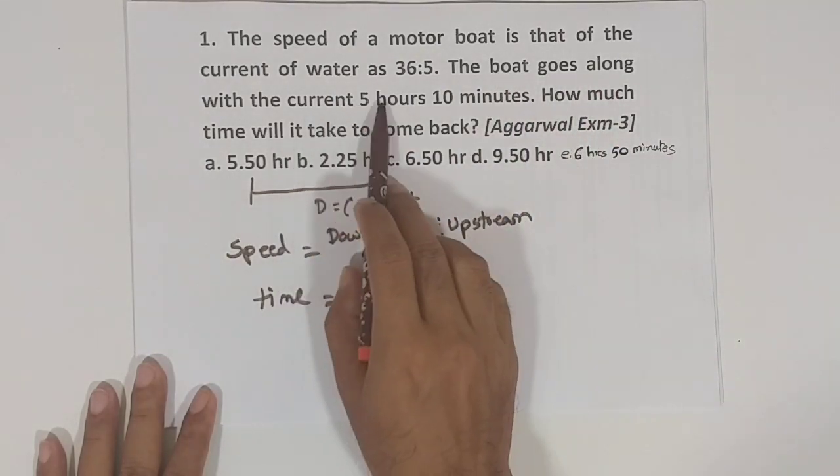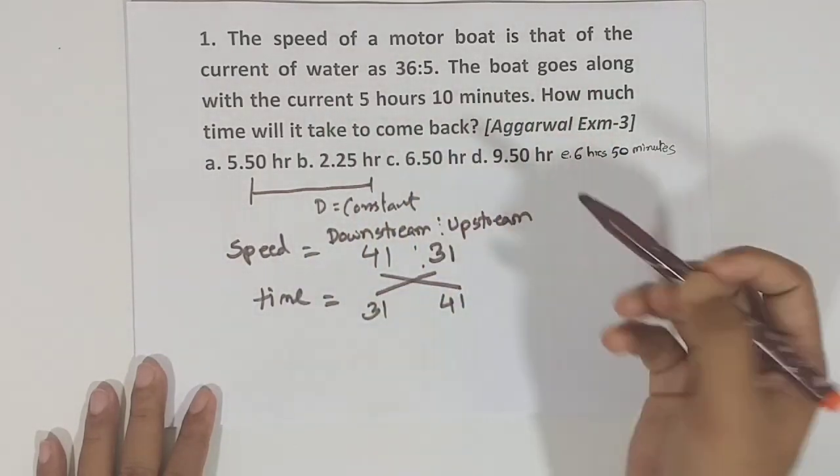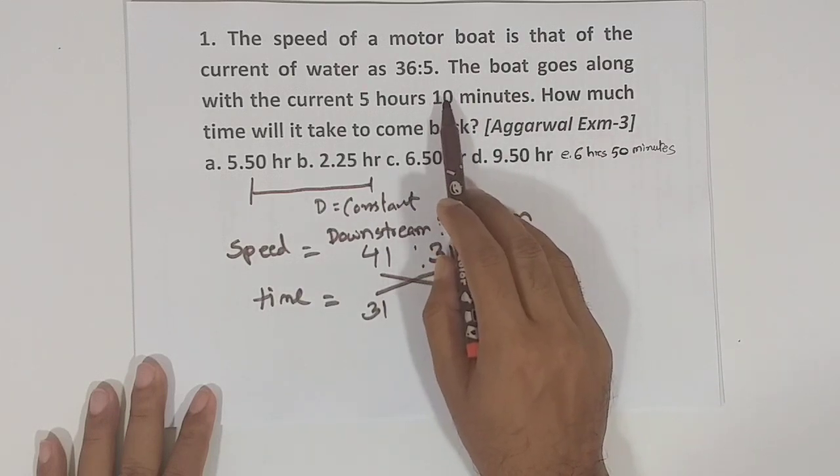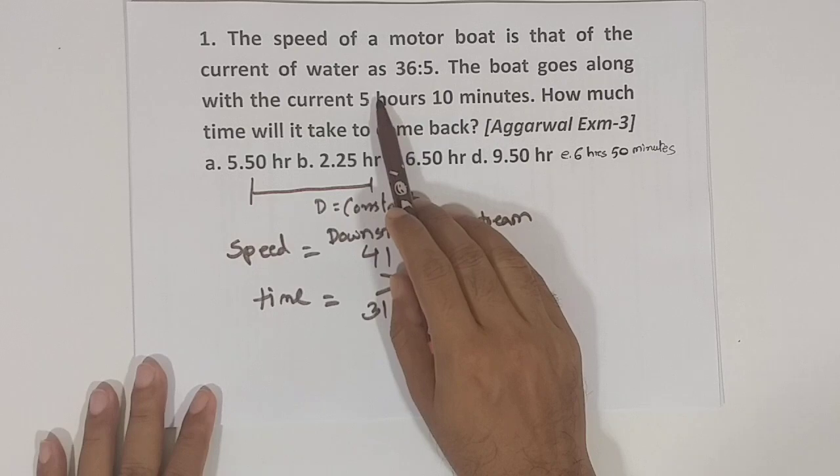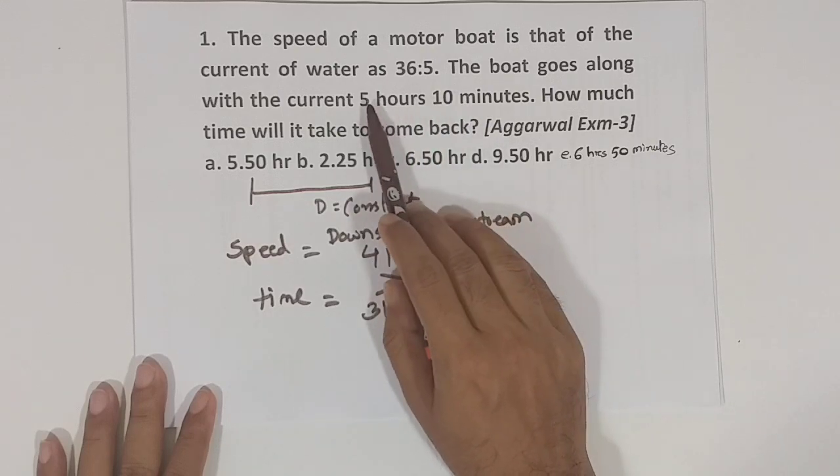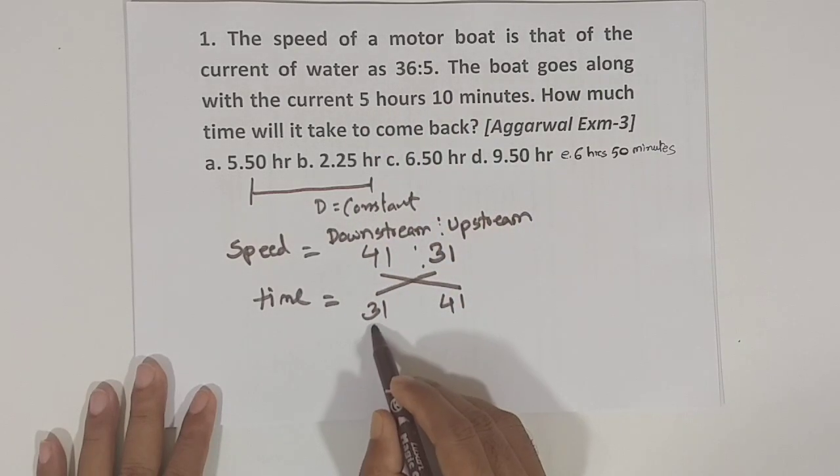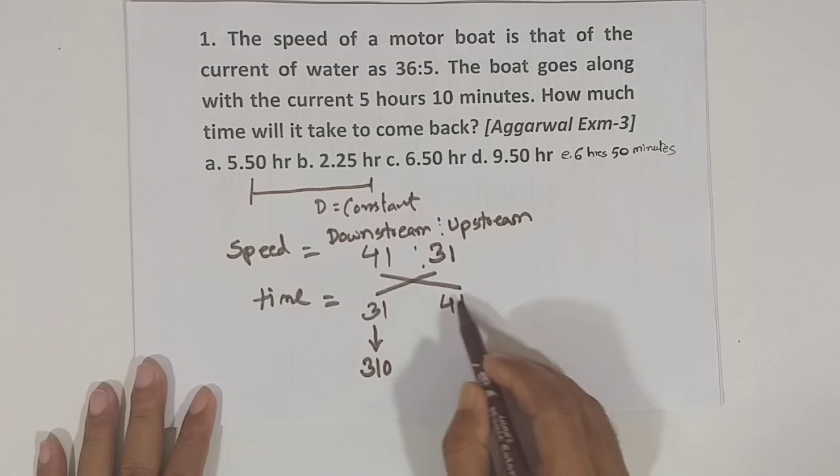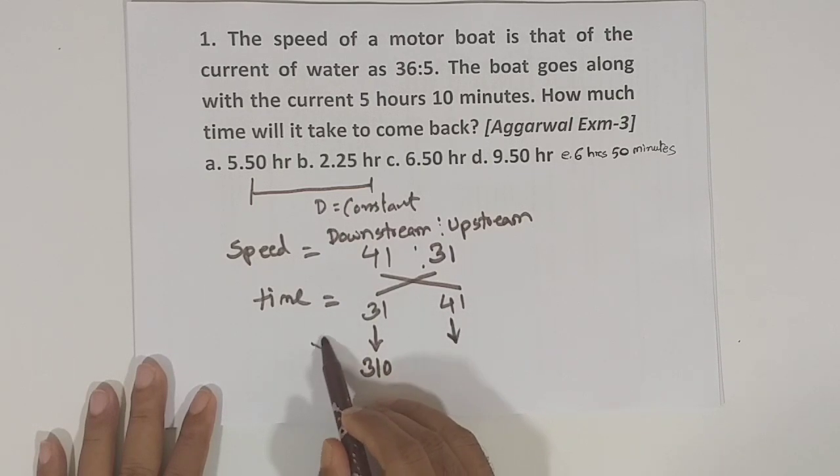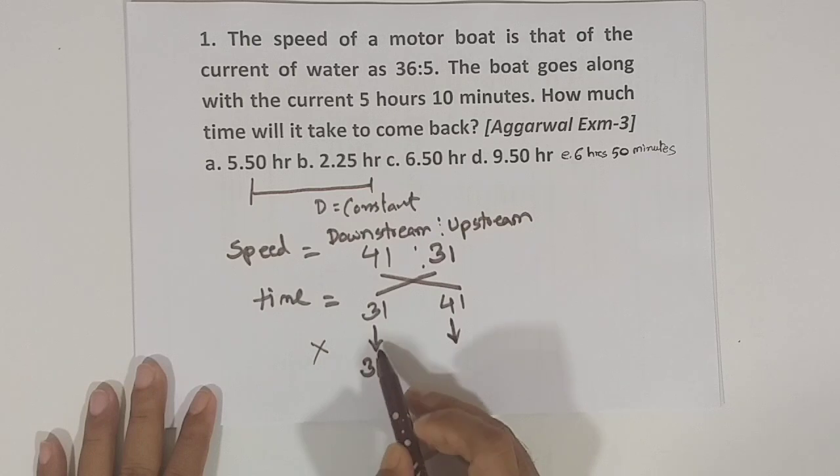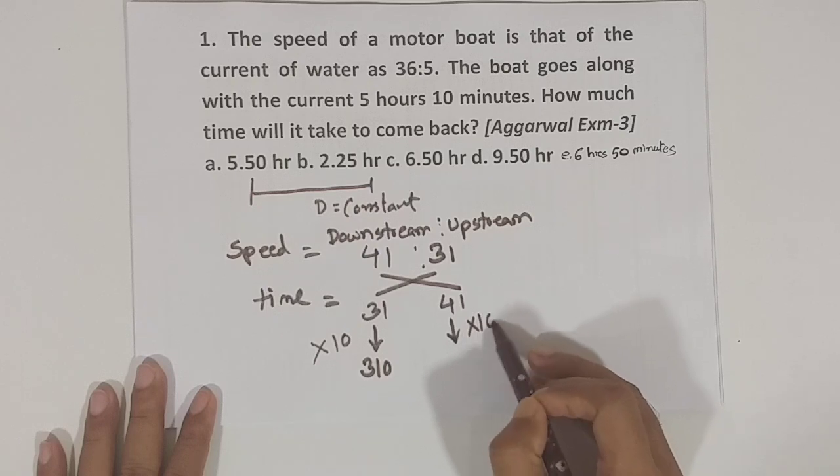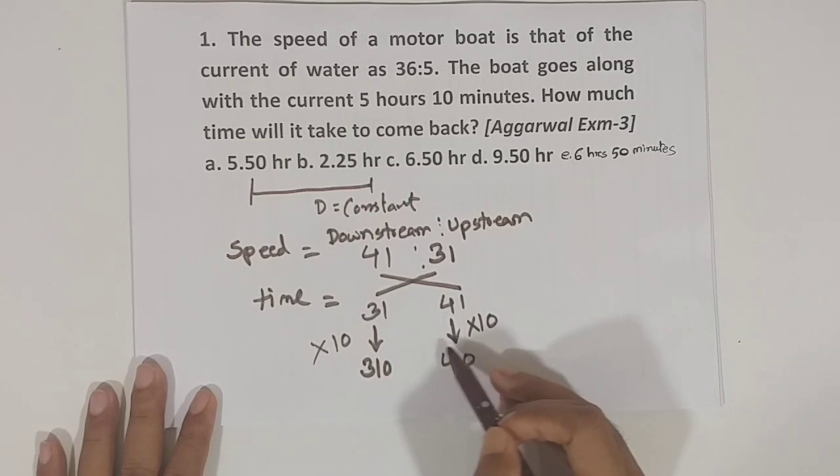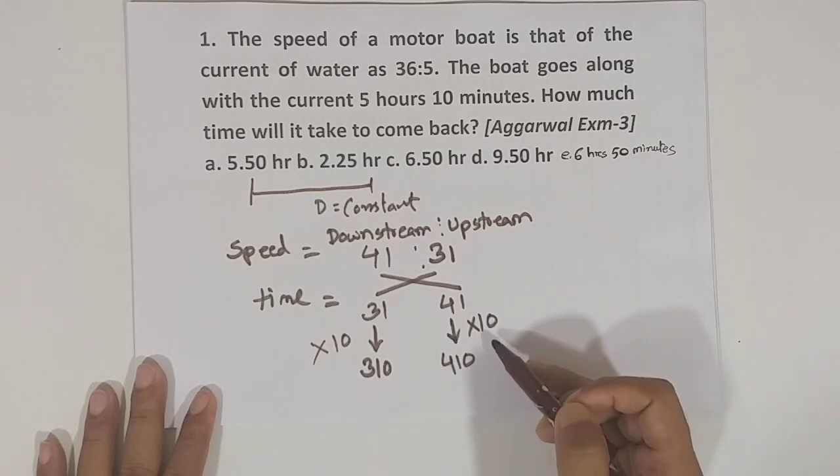It will take 5 hours and 10 minutes. Aamra ekhane convert kori tahle ki hobe - 610 minutes. So, 6 hours, 5 minutes.